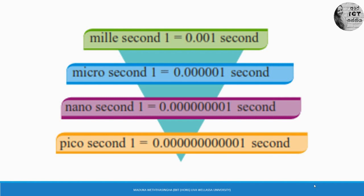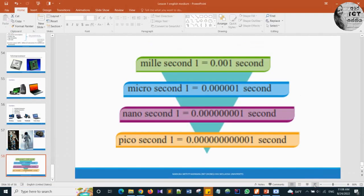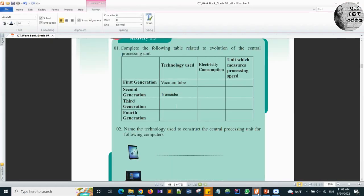Shall we move to your exercise book? Now take out the exercise book and do Activity 1.3. Please pause this video and do the activity 1.3. I think you have done the exercise. I will go to correct it. Activity 1.3 — complete the following table related to the evolution of the central processing unit.